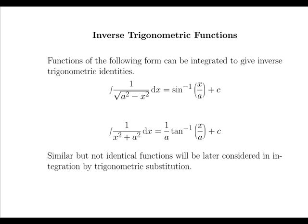Functions of the following form can be integrated to give inverse trigonometric identities. An integral of the form 1 over the root of a squared minus x squared can be integrated to give sine inverse x over a plus c, while an integral of the form 1 over x squared plus a squared dx can be integrated to give 1 over a times tan inverse x over a plus c. In both cases, a is a constant such as 1, 2, or 3, while x is our variable.